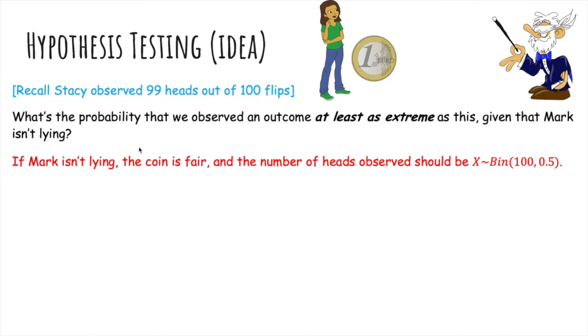So if Mark isn't lying, then the coin is fair. So the number of heads we observe should follow this binomial distribution with 100 trials and 50% chance of heads, because it's fair. So the probability that we observe at least 99 heads – we're going to look for at least as extreme, so not just 99, but also 100 heads. You just sum the binomial PMF, and you get this number here, which has like 28 leading zeros before a 7, 9, 6. And that's basically zero.